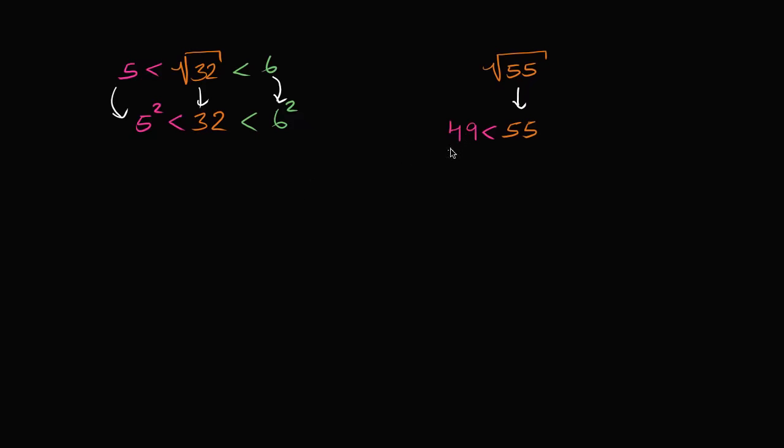That is the same thing as 7 squared. And what's the next perfect square above it? Well, we just figured it out. 7 squared is 49, 8 squared is larger than 55. It's 64. So this is going to be less than 64, which is 8 squared.